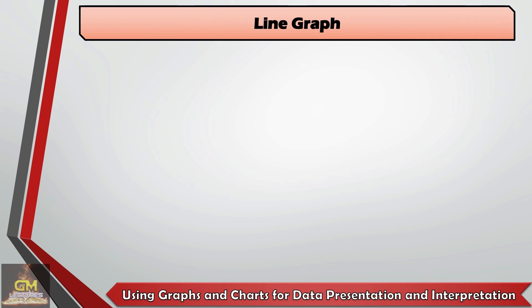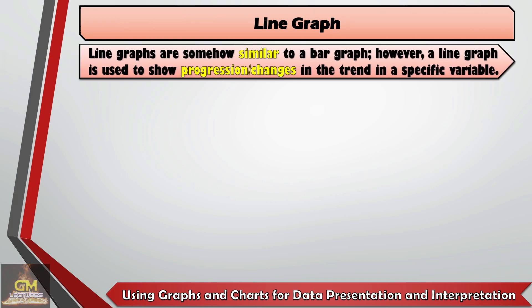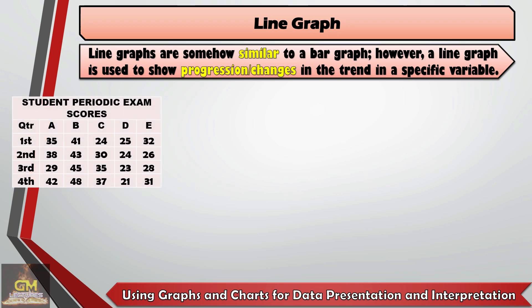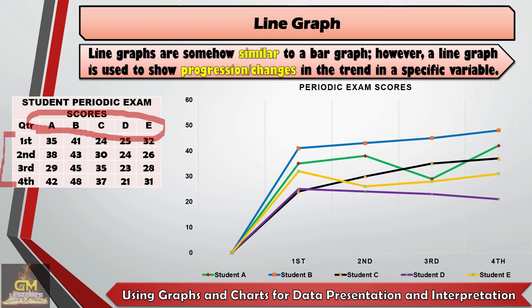And lastly, we have line graphs. Line graphs are somewhat similar to bar graphs. However, a line graph is used to show progression or changes in a trend in a specific variable. For example, we have this data set on students' periodic exams for four quarters. We have five students as our representatives. If we plot the scores in a line graph, we're able to recognize that Student B is the student with consistent high scores.